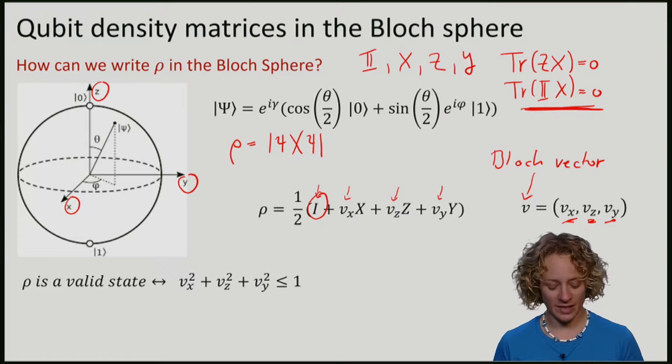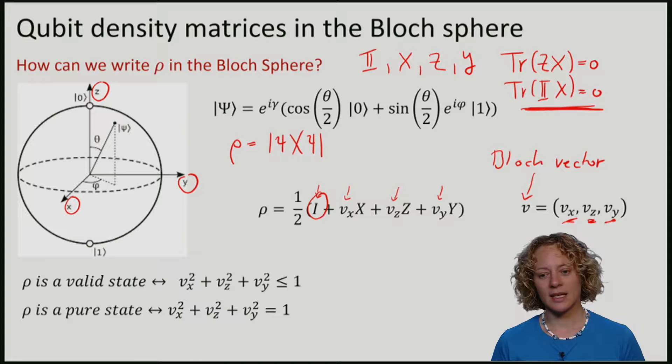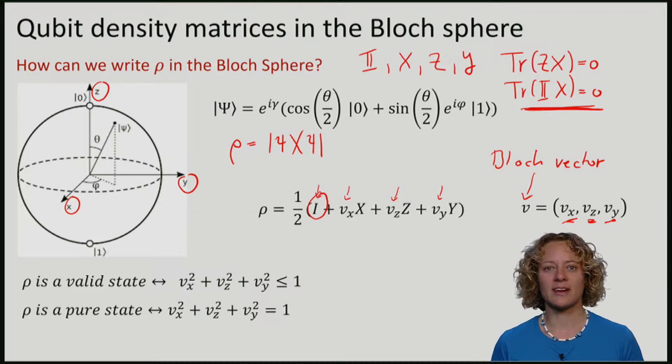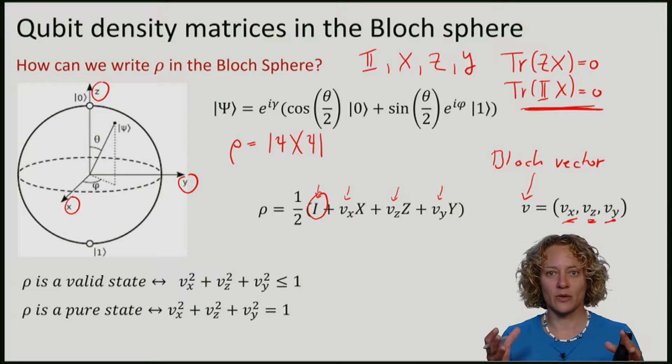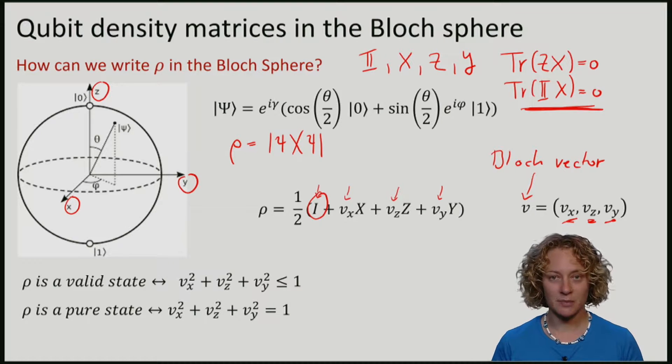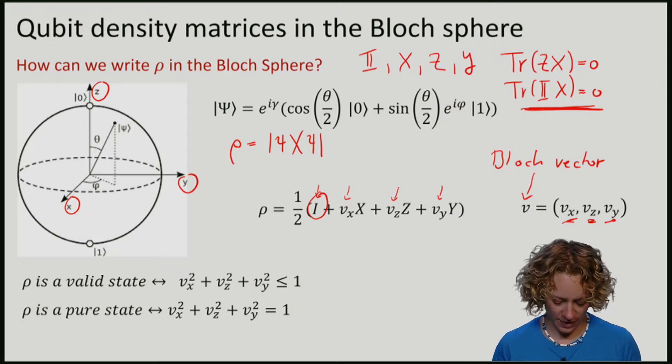For pure states, it turns out that all pure states are living on the surface of the Bloch sphere, meaning that the Bloch vector has length 1.